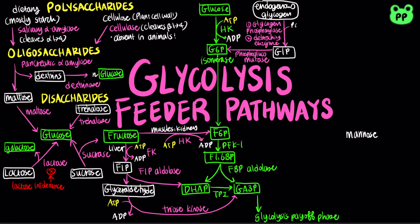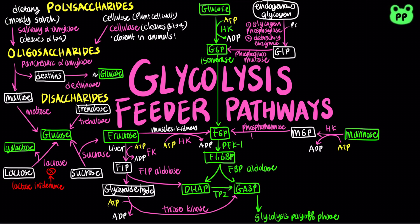Mannose is phosphorylated by hexokinase into mannose-6-phosphate, which is then converted to fructose-6-phosphate by phosphomannose isomerase.